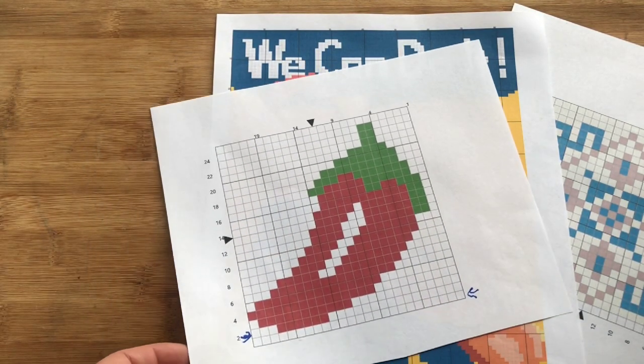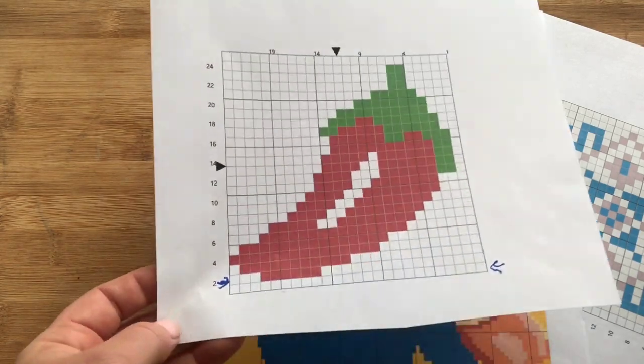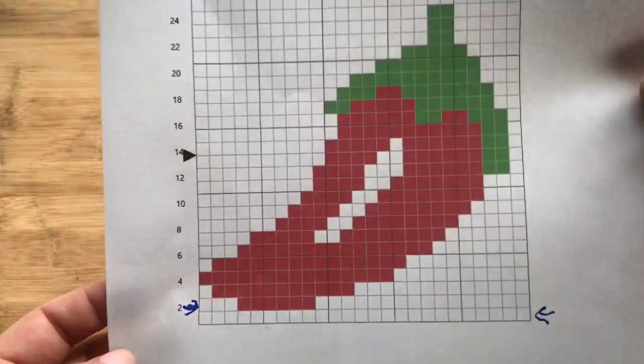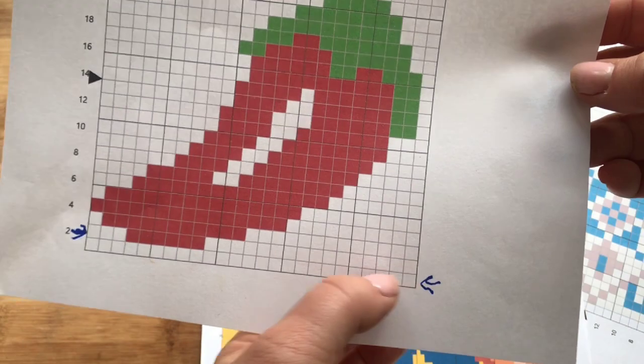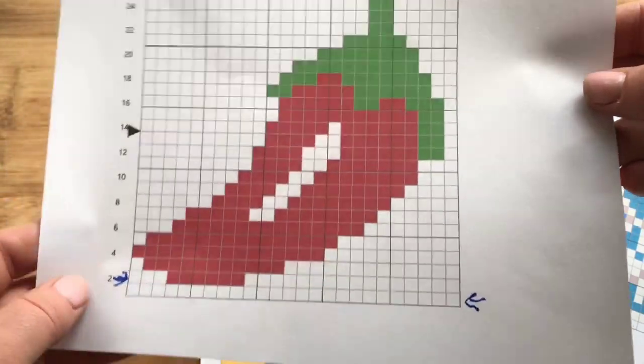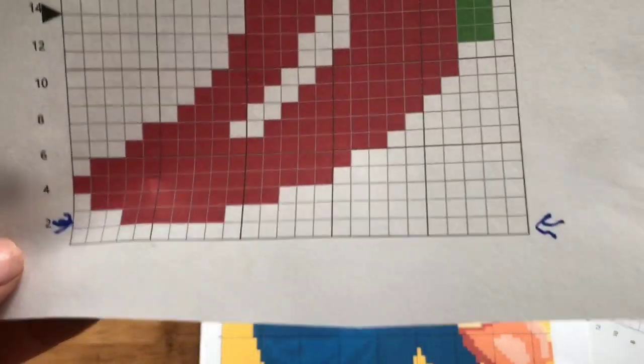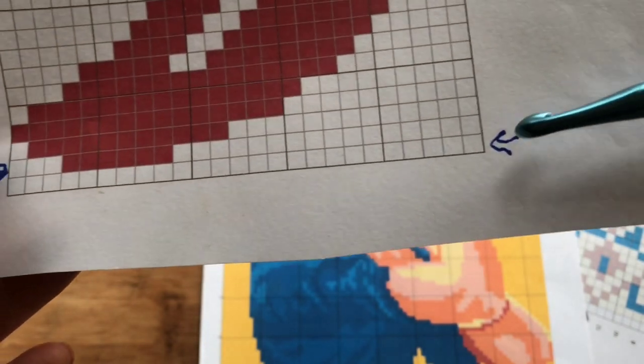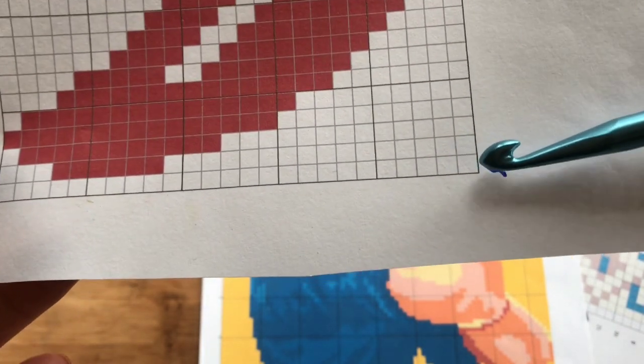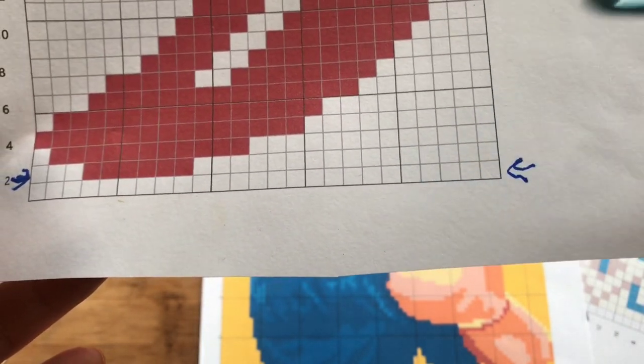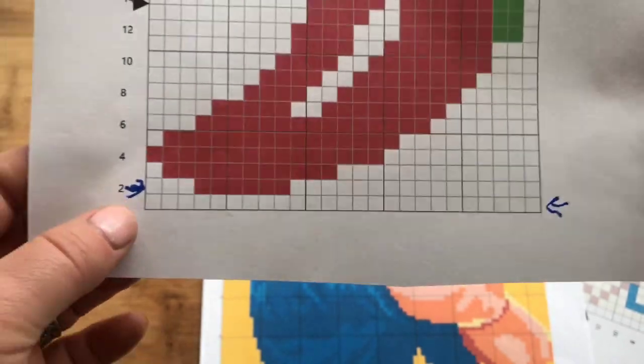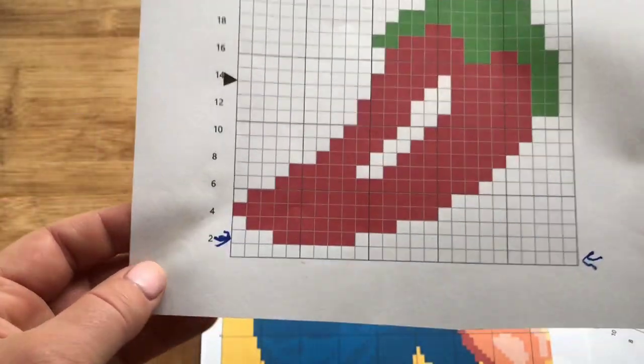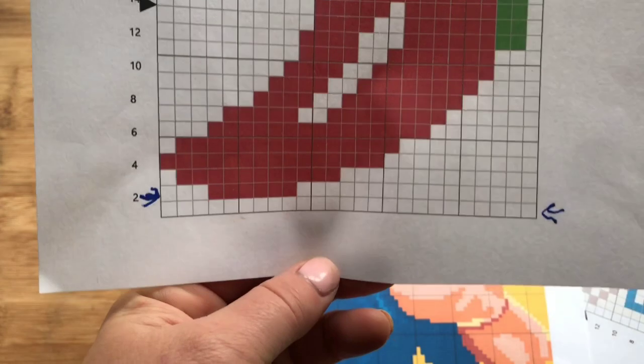You can do a graph and you can work C2C blankets or row by row, it's up to you. Graphs have each square, bunch of squares, it's like grid paper. Each square represents one stitch. So here you'd have one, two, three, four, five stitches.